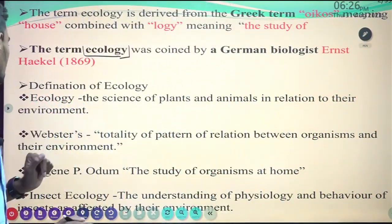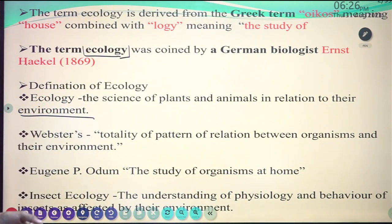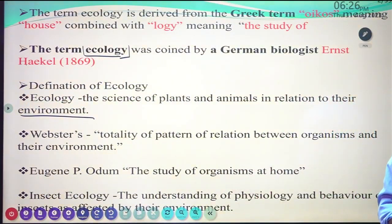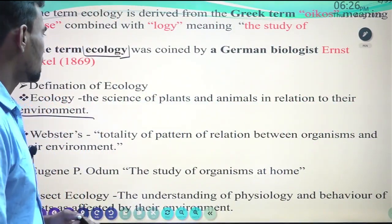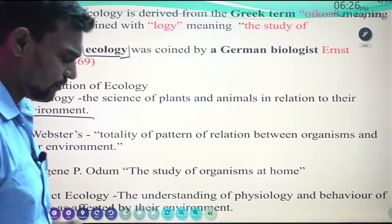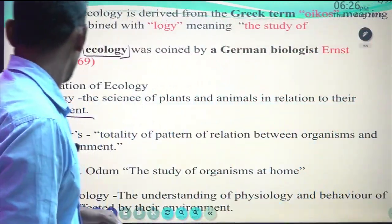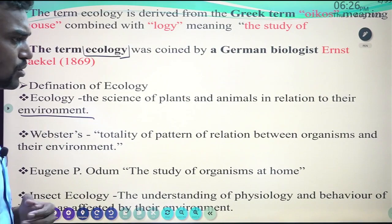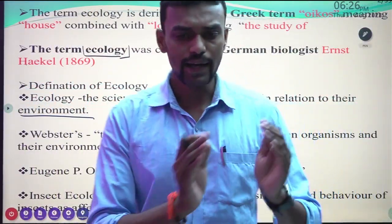Ecology is totally related to the environment. There are many scientists who define ecology, but the main ones are frequently asked in examinations. Webster defined ecology as the totality of the pattern of relations between organisms and their environment — whatever many scientists say, it is about the relation between the environment and a particular organism.